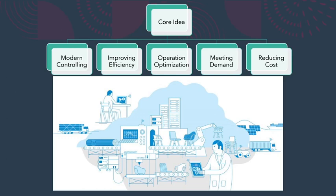Now the Core Idea. It is the fourth phase of Industrial Revolution. The use of high-tech machines in industry with modern controlling. It can be adopted for improving efficiency, optimization of operations, fulfilling demand, and reducing the cost of operations using technology.